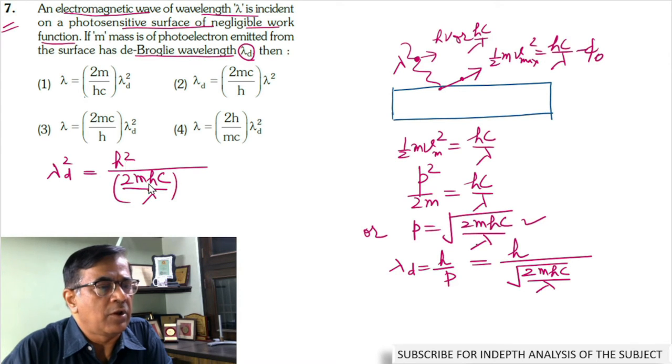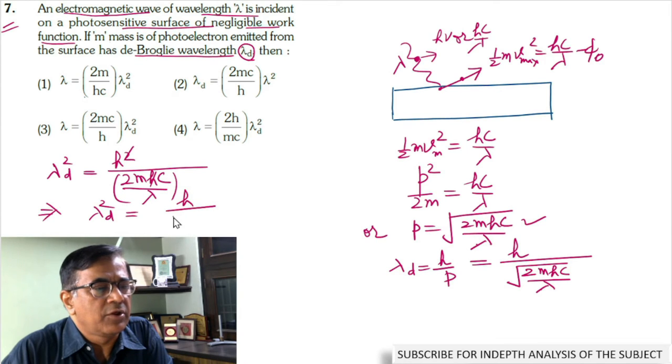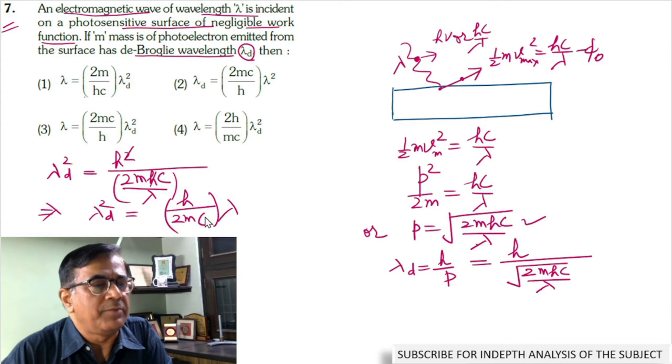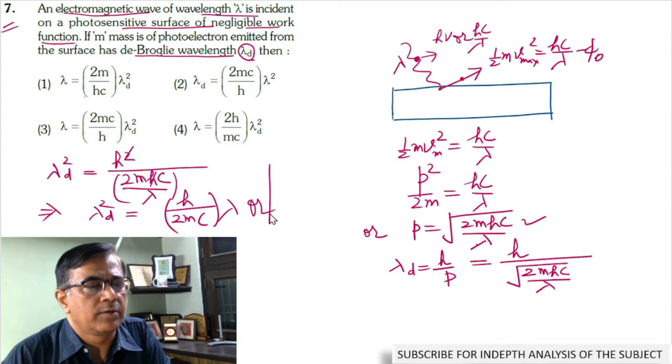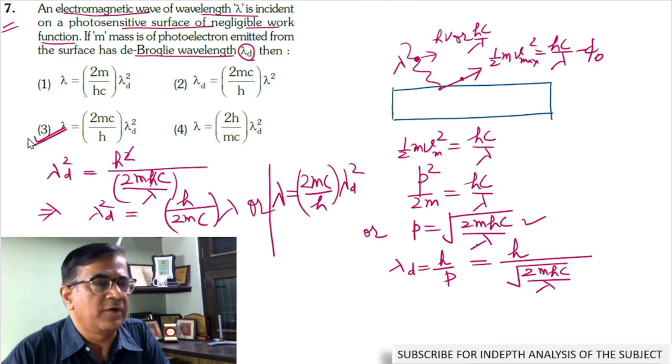H and H will cancel. This implies lambda D square equals H by 2m C times lambda, or lambda equals 2m C by H times lambda D square. Hence, this is the correct option.